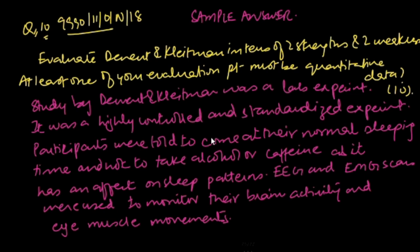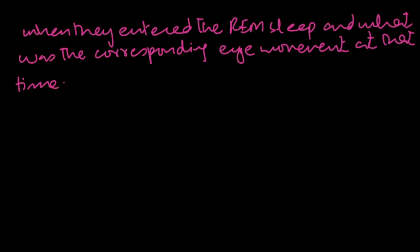Then we are talking about the EEG and EMG scans, and why they were used. They were used to monitor their brain activity and eye muscle movements. And it was done to find out when they entered the REM sleep and what was the corresponding eye movement at that time.